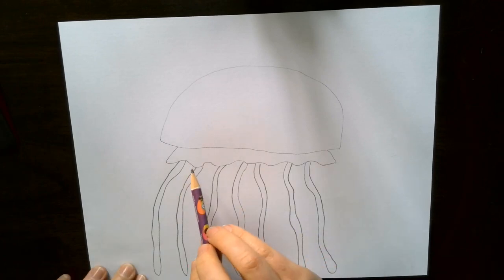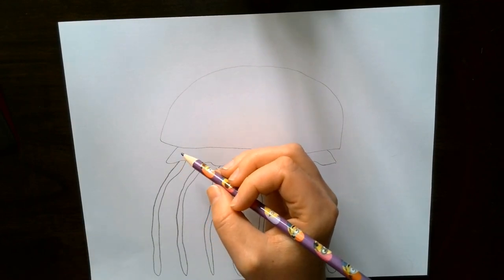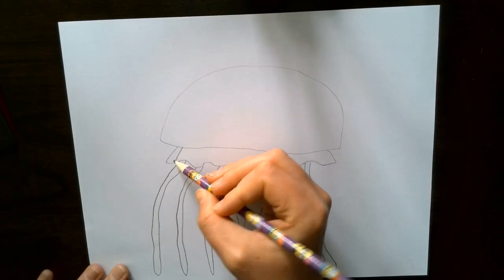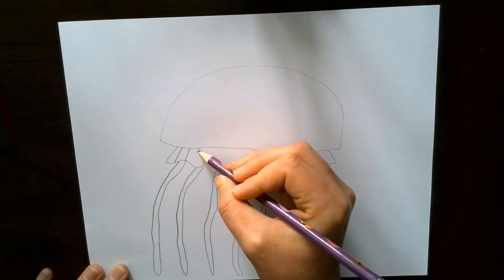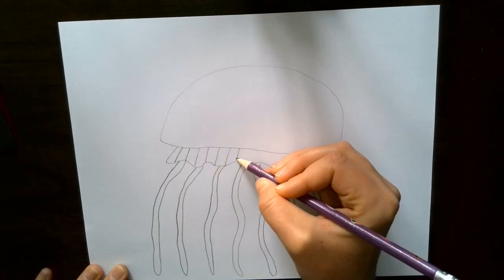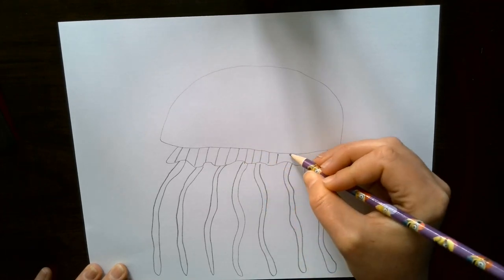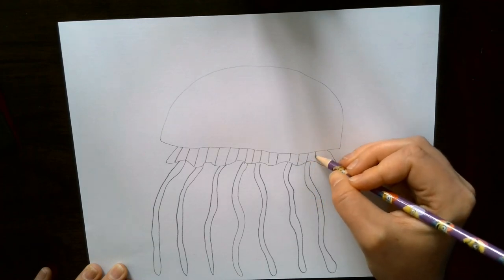Okay, now on this muscle here underneath the bell, we're just going to fill it in with lines going down all the way across. Because if you look close up at a real jellyfish, they often have these kind of lines going across. So we'll fill those in.